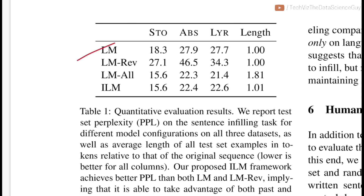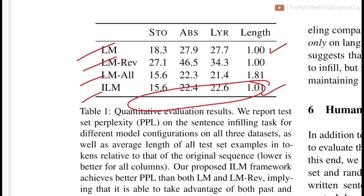Evaluating against existing language models: LMREV appears to be a reversed language model; LMALL considers both prefix and suffix and concatenates them, reproducing everything rather than just the filled portion; and ILM is the infilling language model described here. Looking at perplexity numbers — lower is better — ILM is far better than just using a standard language model or its reversed version, and is almost equivalent to LMALL, while achieving similar perplexity with shorter sequence lengths.